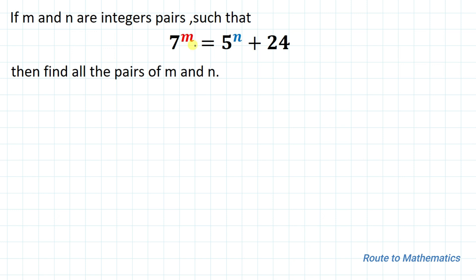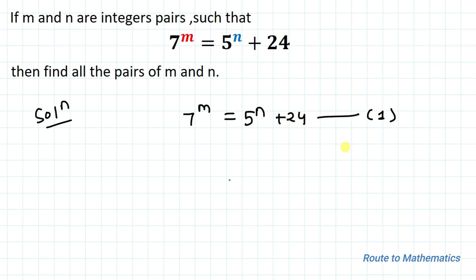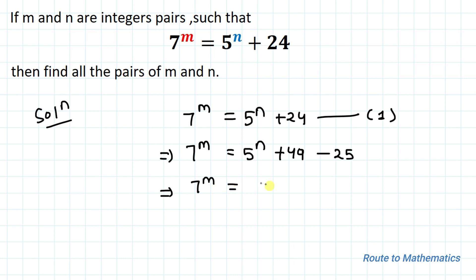So here we have to find the values of m and n. Without any delay let's start the solution. We have given 7 to the power m equals to 5 to the power n plus 24. Let's take it as equation 1. In the next step we can write this 24 as plus 49 minus 25. So this implies 7 to the power m equals to 5 to the power n plus 49, which is 7 squared, and 25, which is 5 squared.